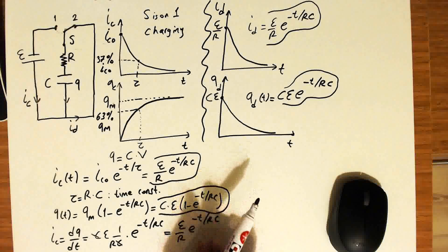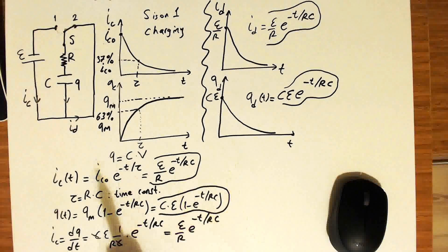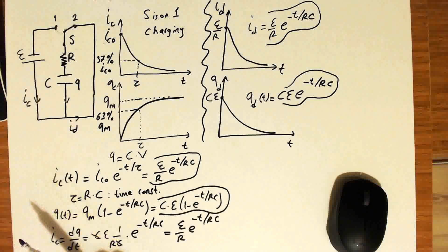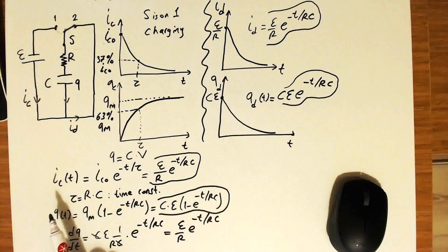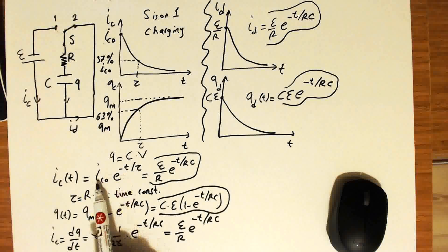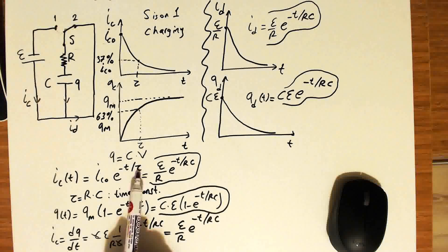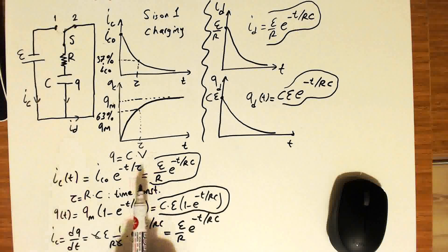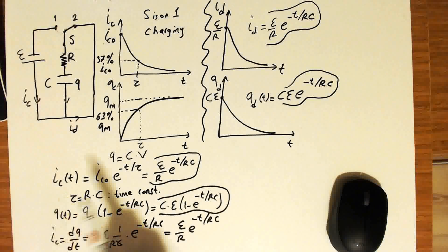We can use all these results in even more complicated circuits. There will be circuits more complicated than this one, but the main idea and equations remain the same, because whenever you have a capacitor in a branch of a circuit, the current will change according to these exponential expressions. The only change is the time constant, which changes according to the resistor in the branch containing the capacitor. We will also learn how to find the time constant for charging or discharging in more complicated circuits.